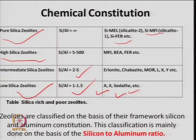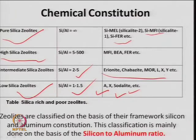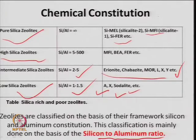Zeolites are classified on the basis of their framework silicon and aluminum constitution and silicon-to-aluminum ratio. Named by IZA according to these properties. Pore size and opening framework must be checked — first, crystallinity (definite structure), then surface area (high surface area). Characterization determines the classification under a particular type of zeolite.